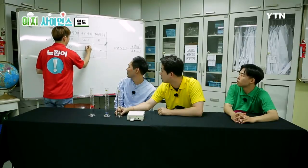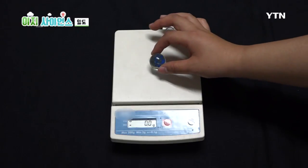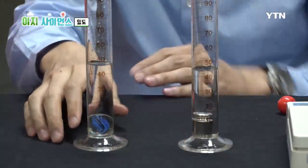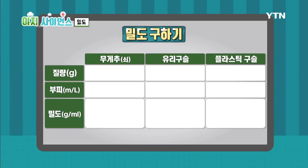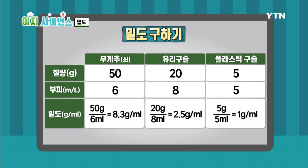그렇다면 이제 정말 밀도 값을 구해볼까요? 공식은 간단합니다. 앞서 구했던 질량과 부피 값을 나누기만 하면 밀도를 알 수 있는데요. 무게추의 질량 50에 부피 6을 나눴더니 밀도가 8.3g/ml, 유리 구슬은 20 나누기 8, 2.5g/ml, 플라스틱 구슬은 1g/ml의 밀도 값이 나왔습니다.